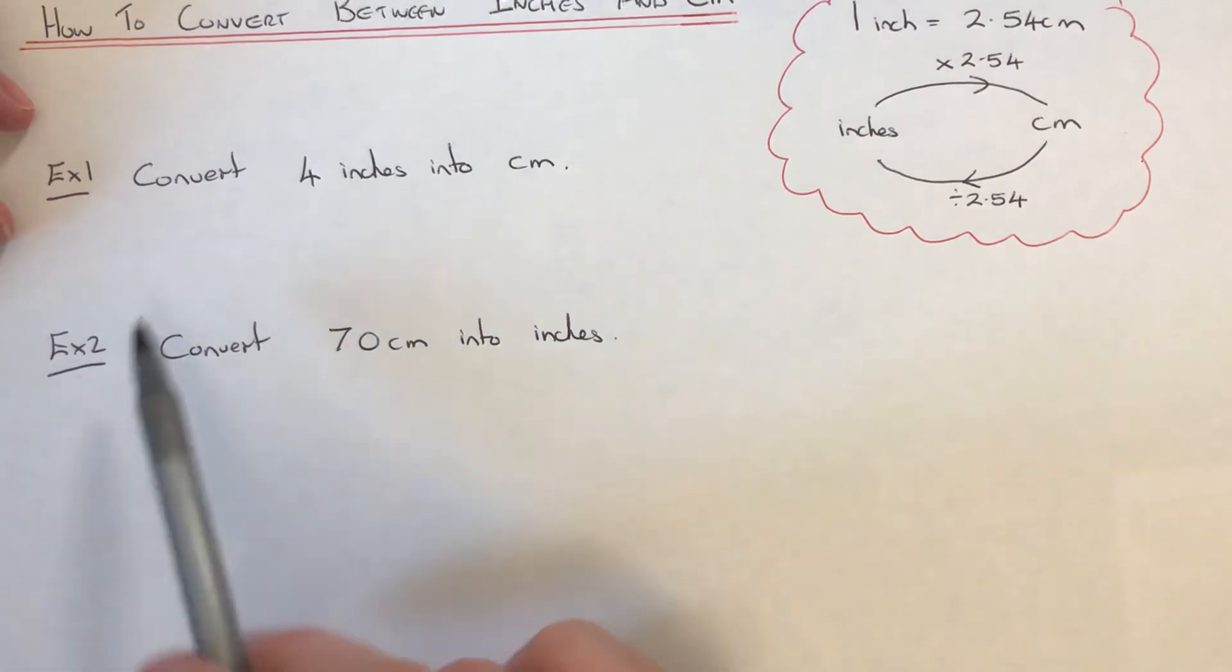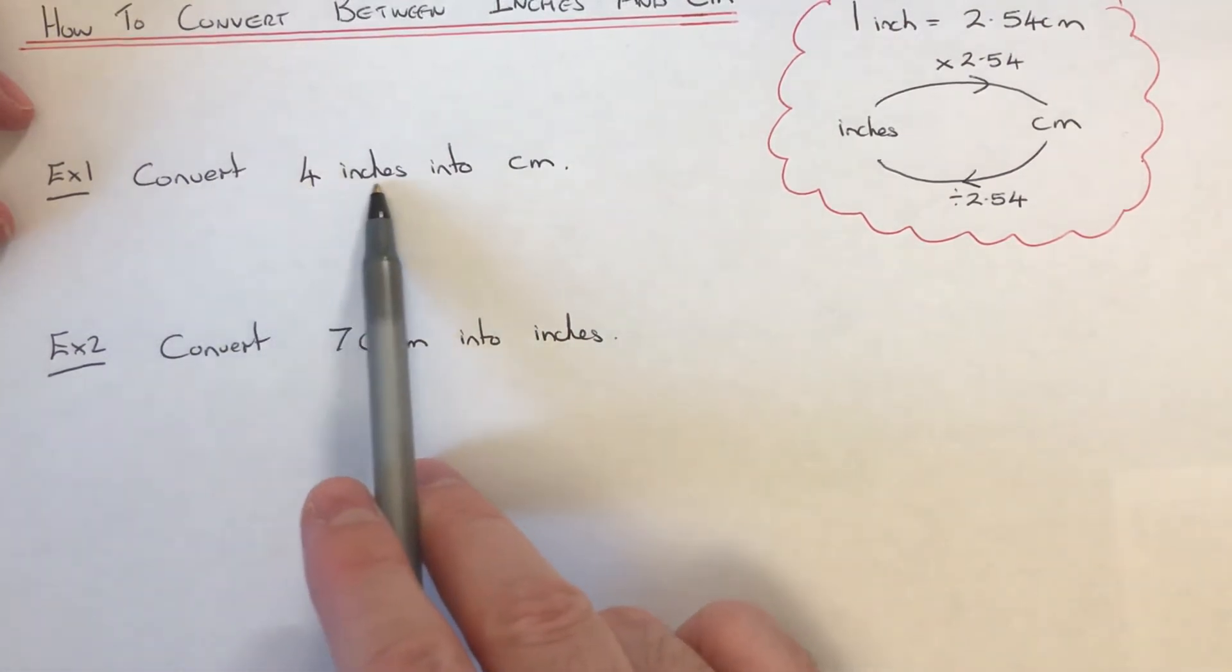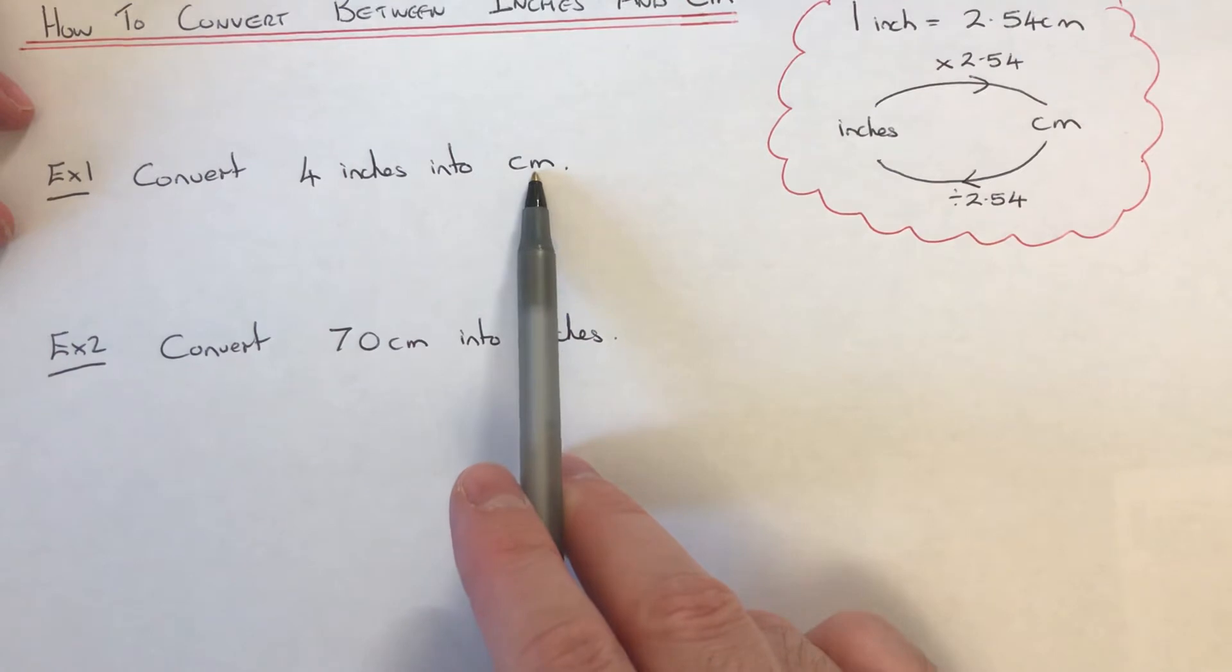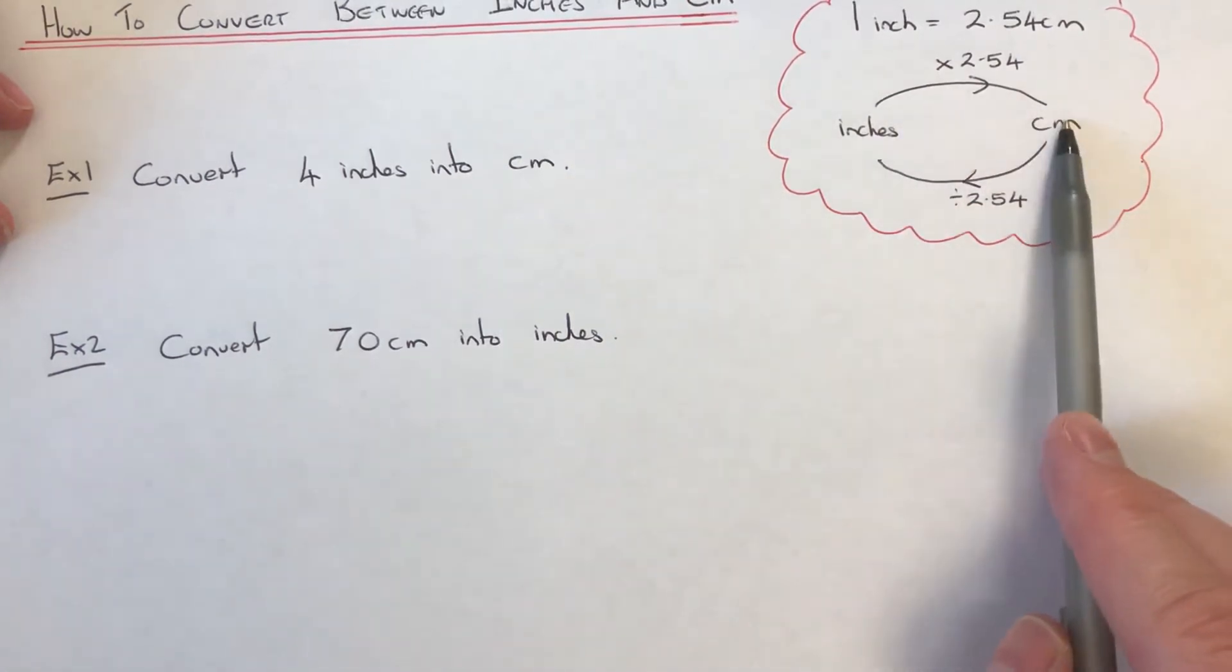So let's have a look at the two examples here. The first one is to convert four inches into centimeters. So inches to centimeters, we need to multiply by 2.54.